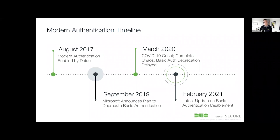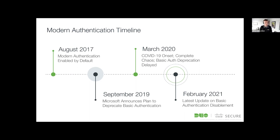Microsoft is now taking a more logical approach. Rather than a hard cutoff, they're going to be disabling basic auth on tenants based on protocol usage. So it's not going to be a single hard cut-off where you suddenly have a bunch of support tickets out of the blue. But you do need to be aware of this and get ahead of the curve. They're disabling it on a per-protocol basis based on what protocols are actually in use in your environment.